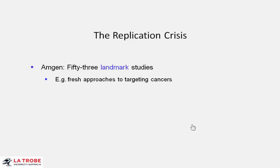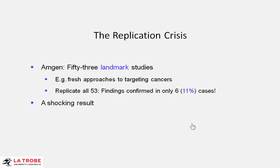Why? Well, triggered largely by the replication crisis. For example, a company, Amgen, wanted to invest in producing new cancer therapies. It checked through landmark studies right at the forefront of cancer research published in top peer-reviewed journals and chose 53 that looked promising. And before it invested its money in clinical development, it arranged for all 53 to be replicated.